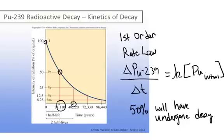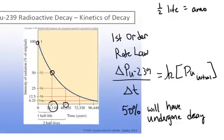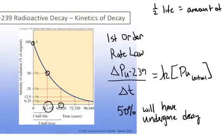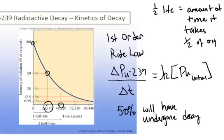That particular amount of time is identified as the half-life of the radioactive isotope. So the half-life is equal to the amount of time it takes for half of the original sample to decay.